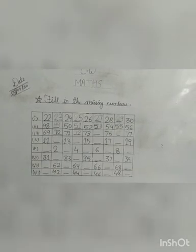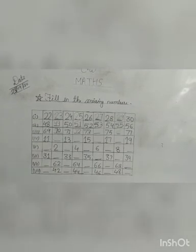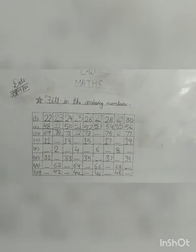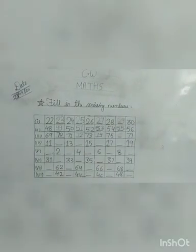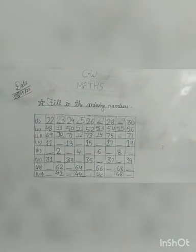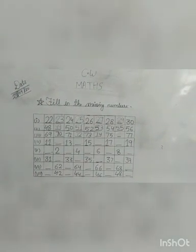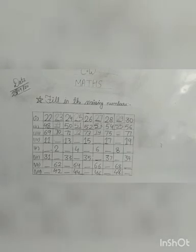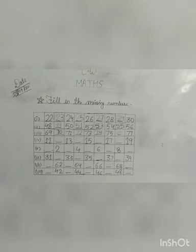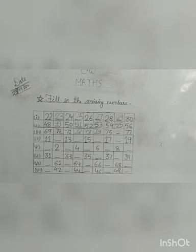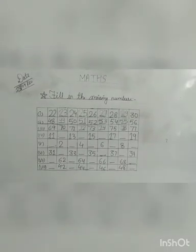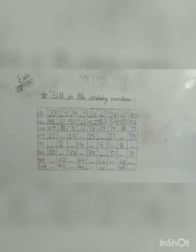73 is already written here. After 73, what we will write? 74. So write 74. 75 is already written here. So what comes after 75? Yes, 76. Write 76. The line is complete.